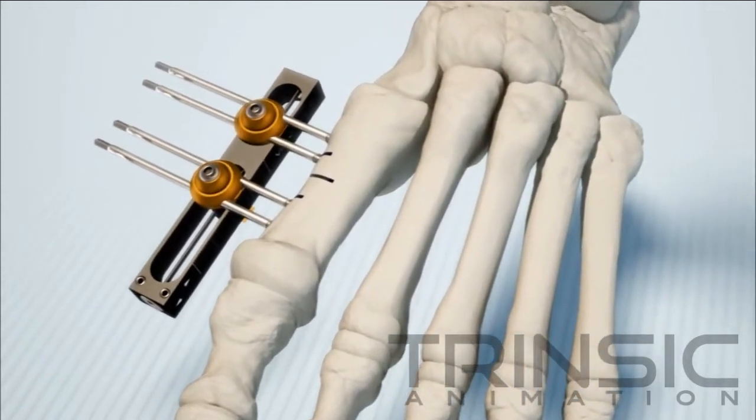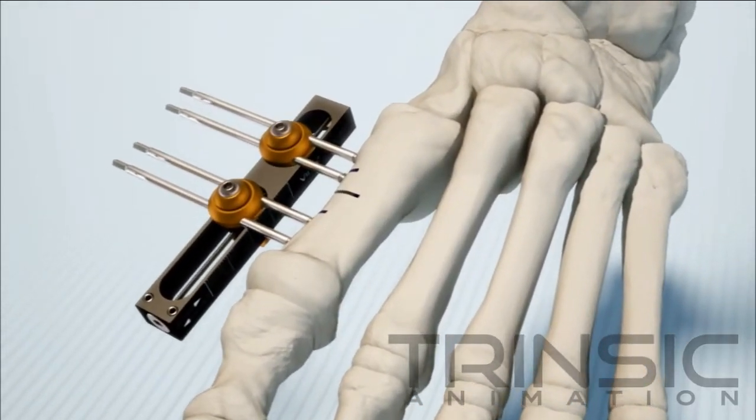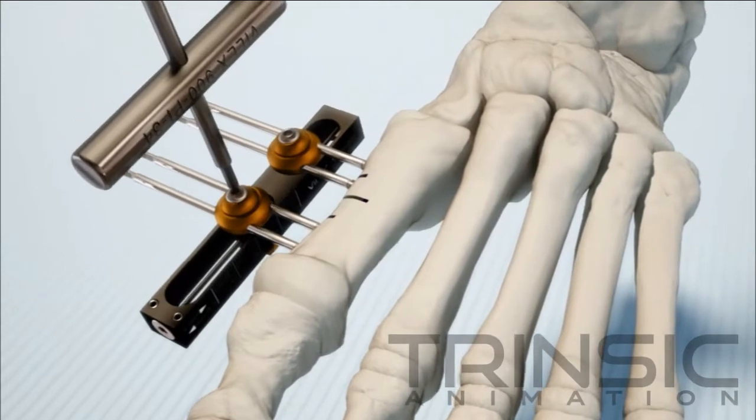Holding the foot with one hand, adjust the orientation of the rail axis so it is parallel to the direction of distraction or compression as the case may be.